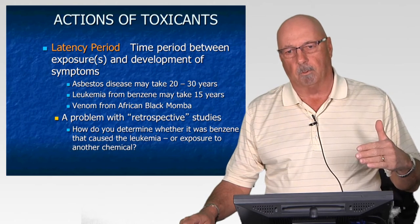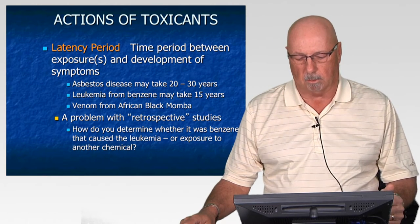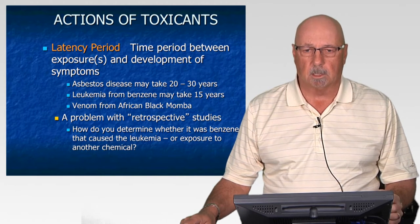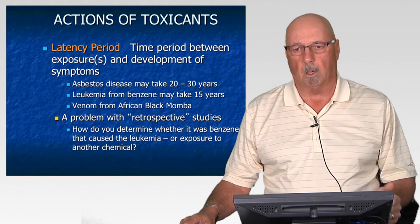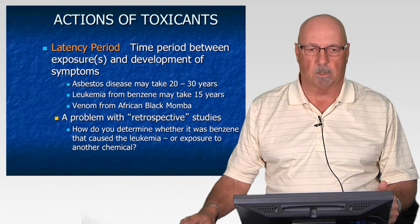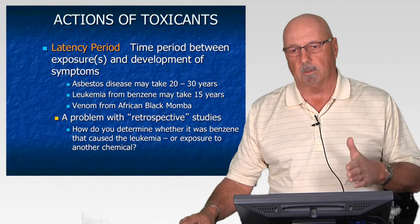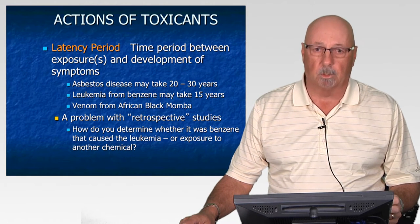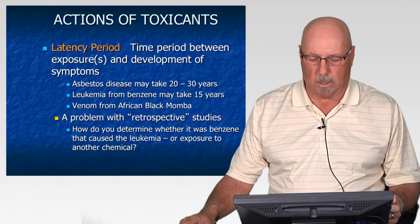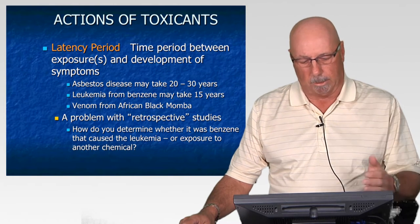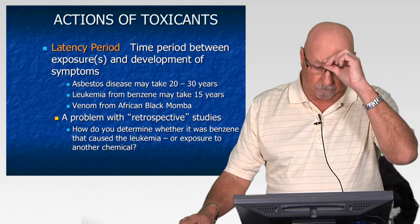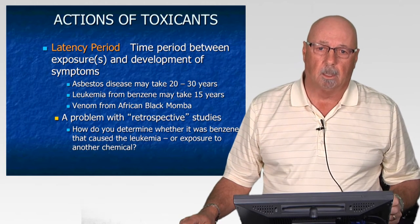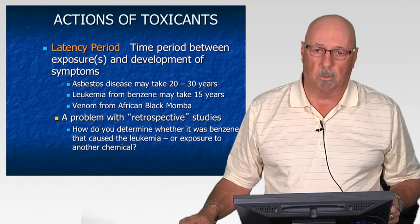Respiratory tract cancers, asbestosis, and mesothelioma don't show up for 20 or 30 years after exposure, so the individual worker doesn't really notice they're being overexposed. Once symptoms do appear on chronic exposures with these latency periods, we usually find that they're irreversible — we can't correct the damage. Another classical example is the formation of leukemia from workers exposed to benzene.